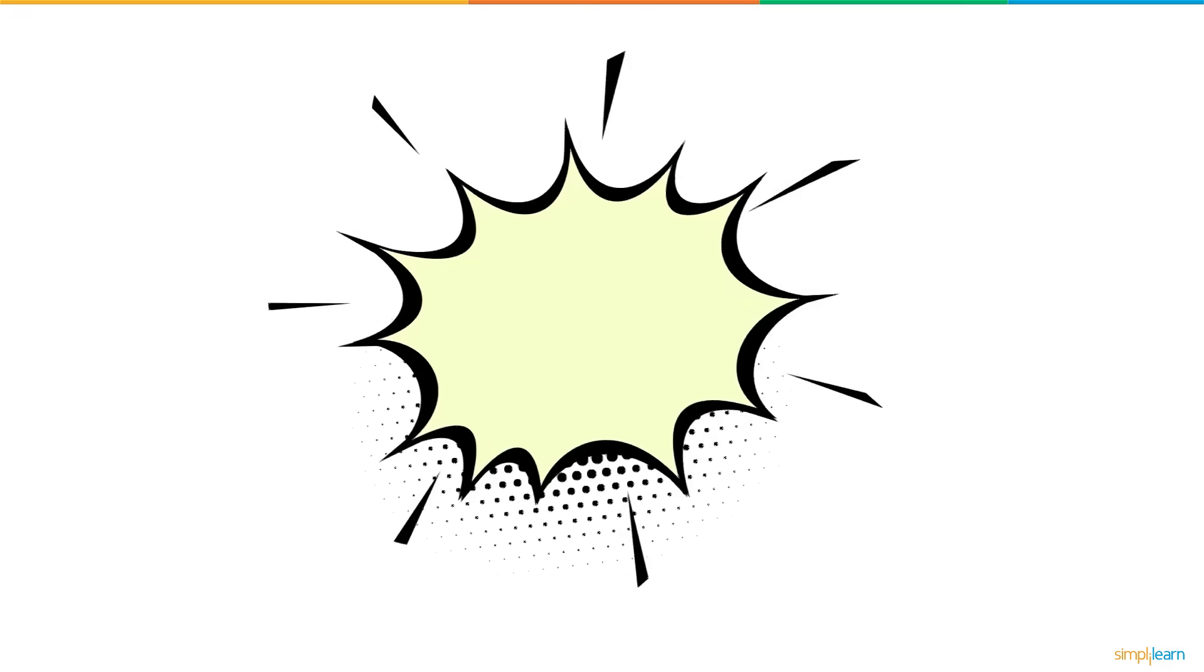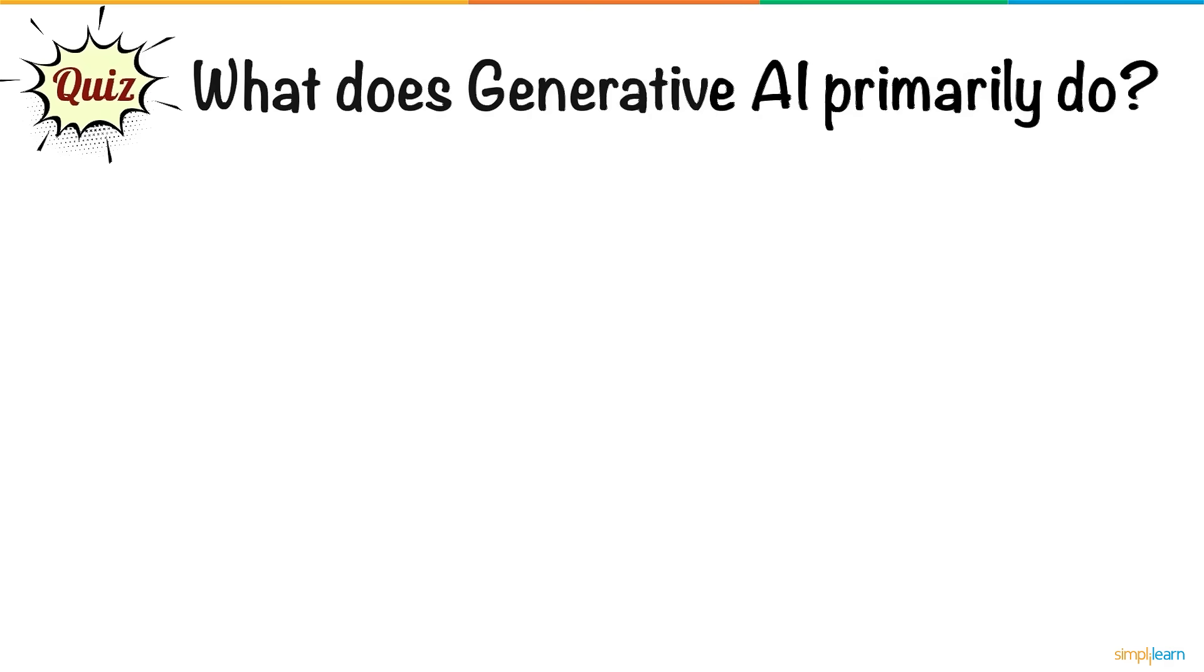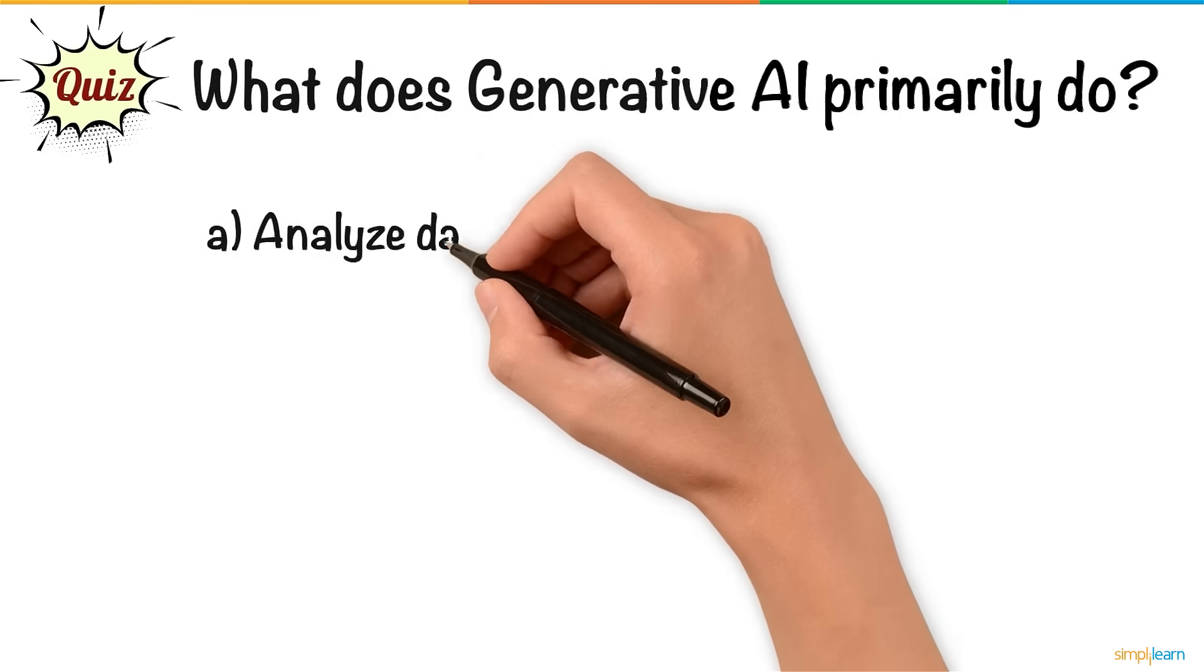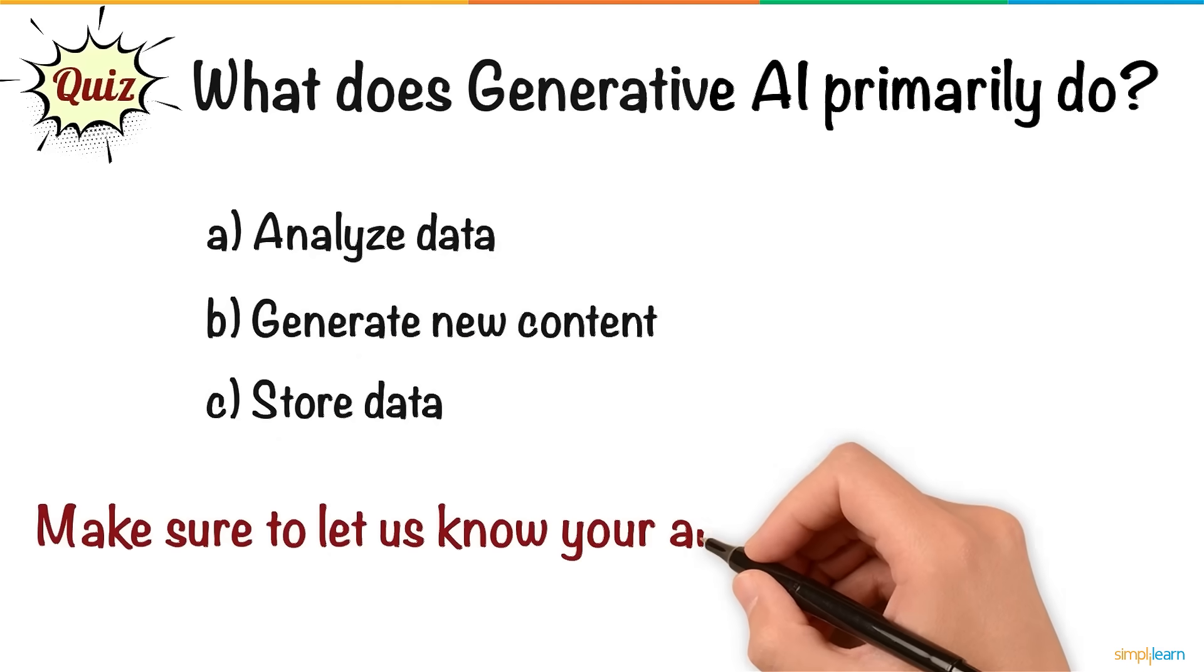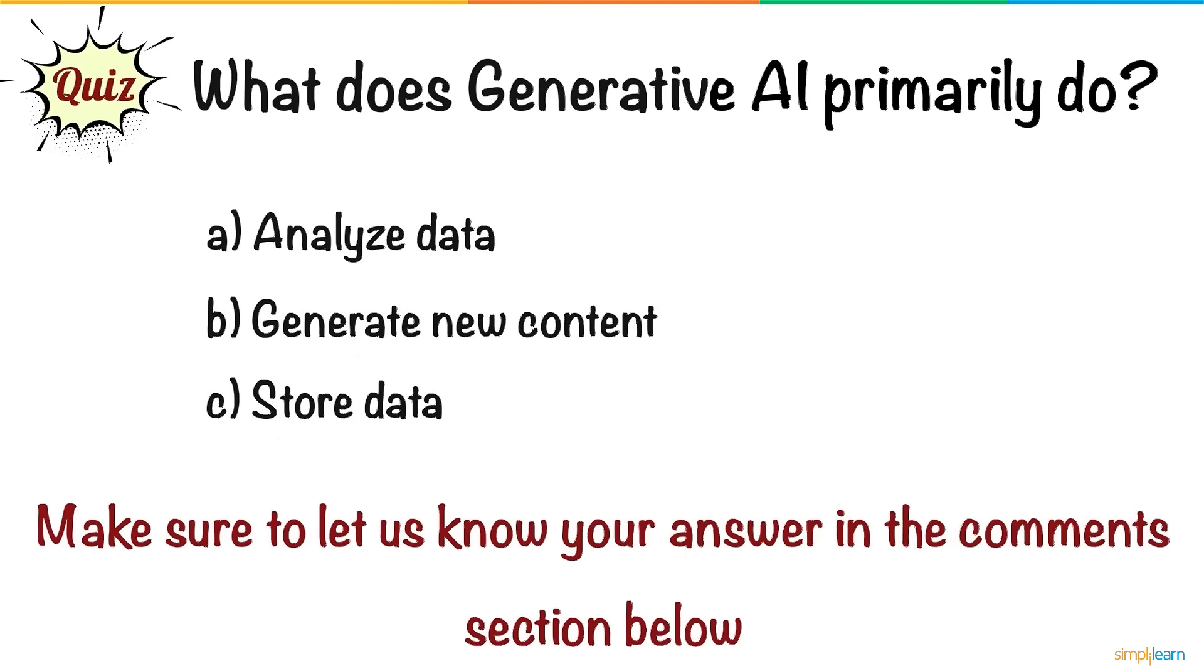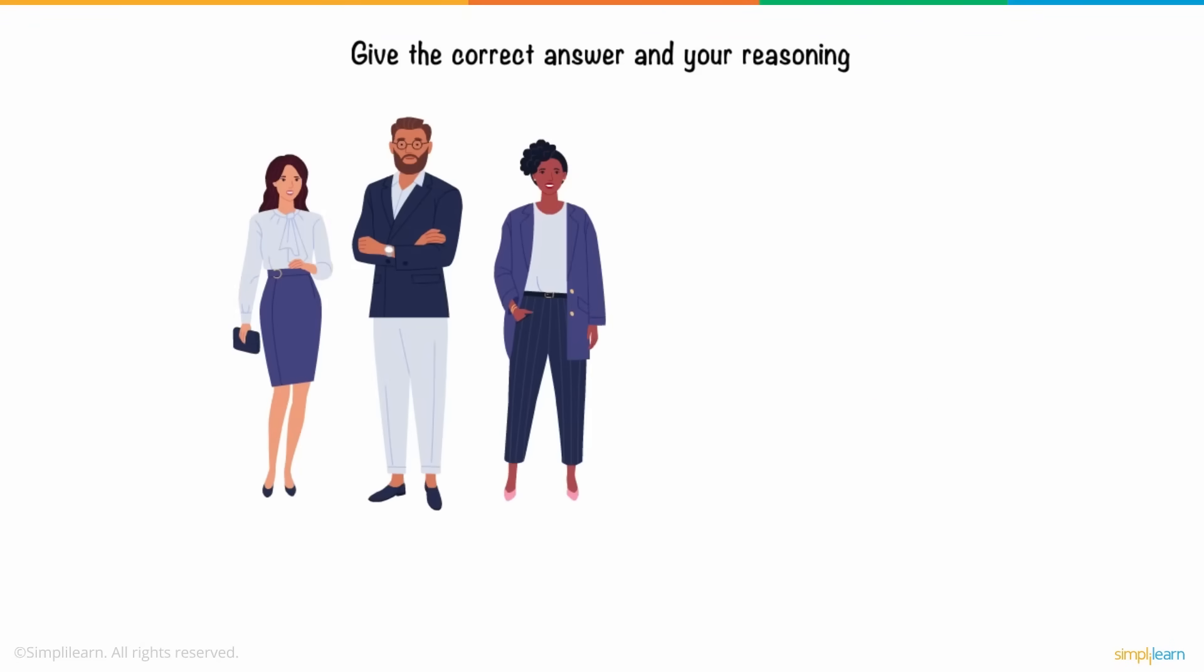Now, let's have a quick fun quiz on what we have learned so far. What does generative AI primarily do? A. Analyze data. B. Generate new content. C. Store data. Make sure to let us know your answer in the comments section below for a chance to win an Amazon voucher.